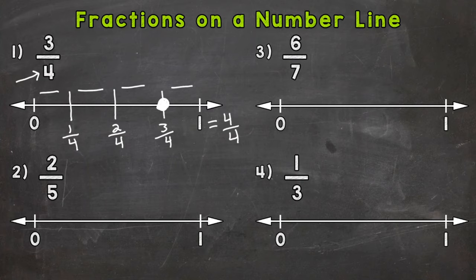So on to number two, where we have two-fifths. So our denominator of five tells us that we need five equal pieces, or fifths. So one, two, three, four, and five. Now with practice, and the more you do, you'll get better with your spacing as far as splitting number lines into fractions.